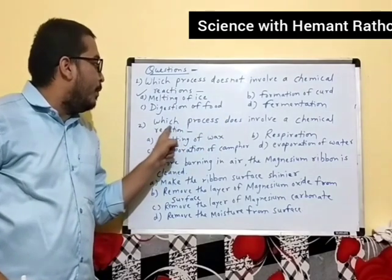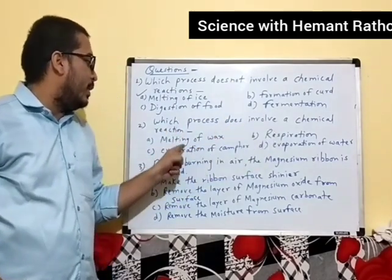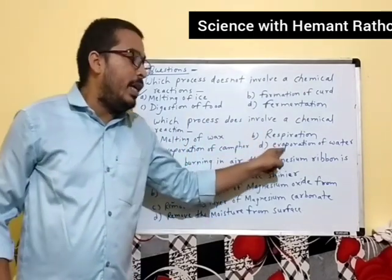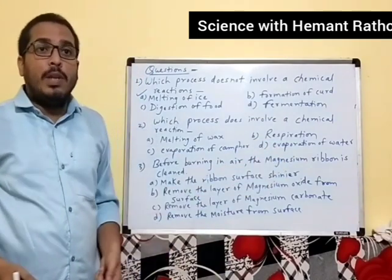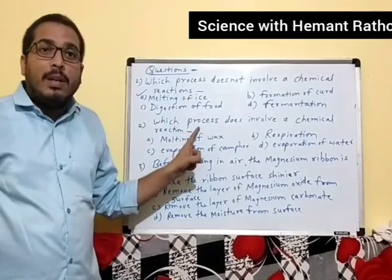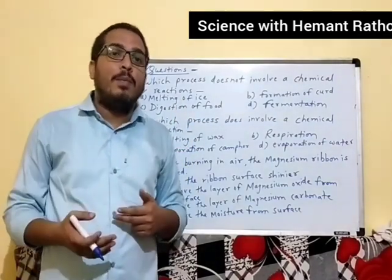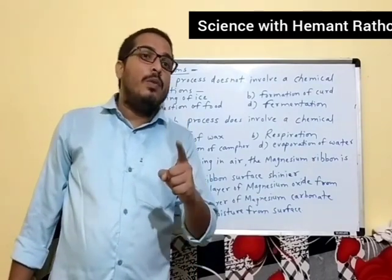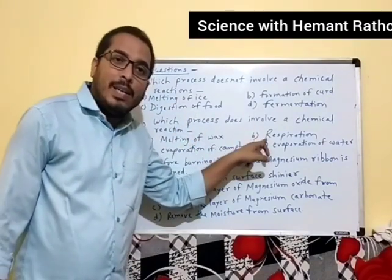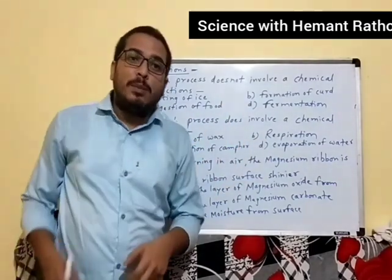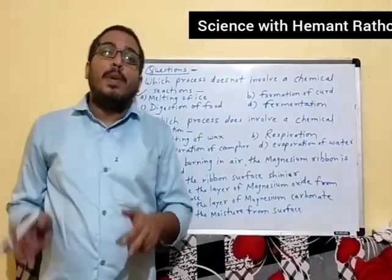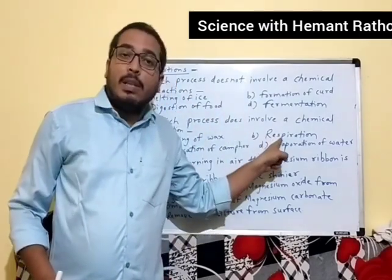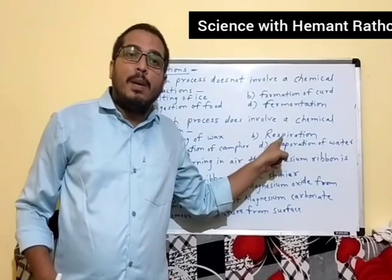Next question: which process does involve a chemical reaction? A: melting of drugs. B: respiration. C: evaporation of camphor. D: evaporation of water. According to the definition, if a new substance is formed from the old one, that is called a chemical change. The correct answer is option B, respiration, because in respiration, carbohydrate or glucose breaks down into carbon dioxide and water. So the process of respiration is an example of chemical changes.